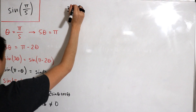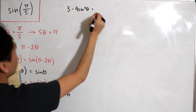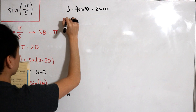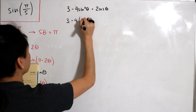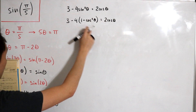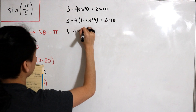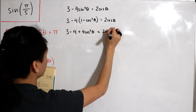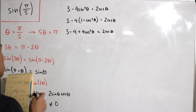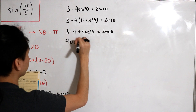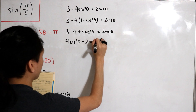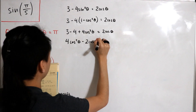After dividing by sine θ, we have three minus four sine squared θ equals two times cosine θ. We can expand sine squared θ using the Pythagorean identity — replacing it with one minus cosine squared θ — so this becomes three minus four times (one minus cosine squared θ) equals two cosine θ. Distributing gives us three minus four plus four cosine squared θ equals two cosine θ. Getting everything on one side, we have four cosine squared θ minus two cosine θ minus one equals zero.